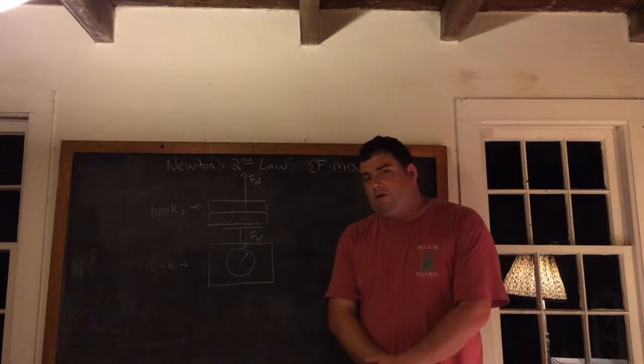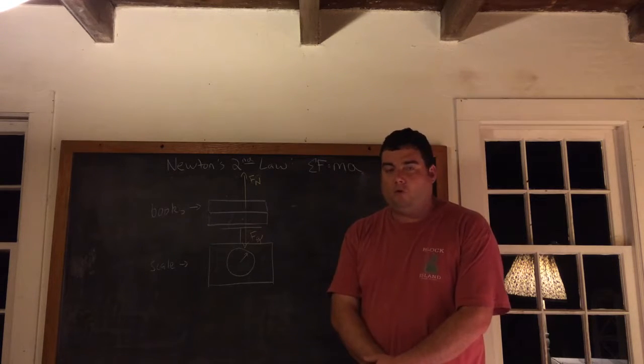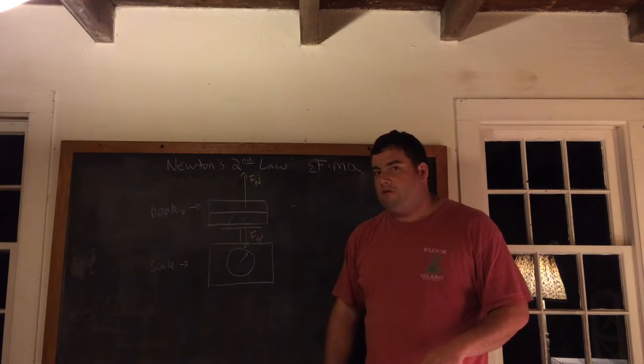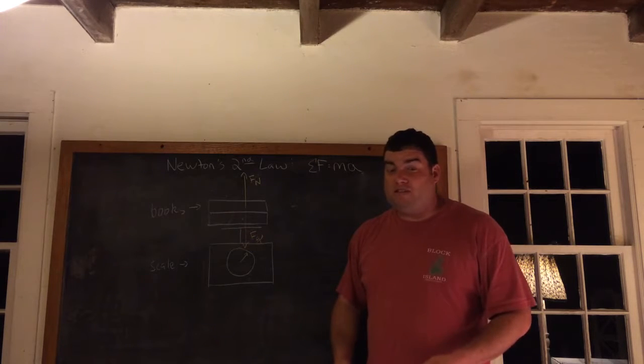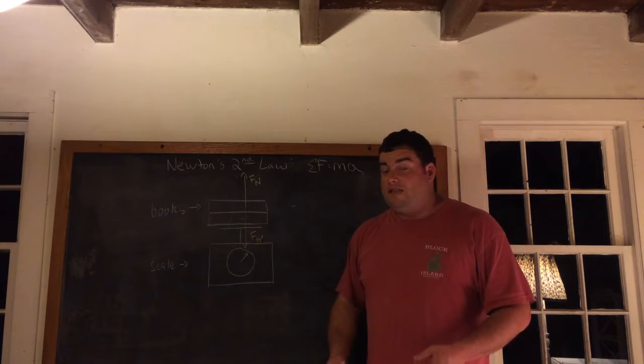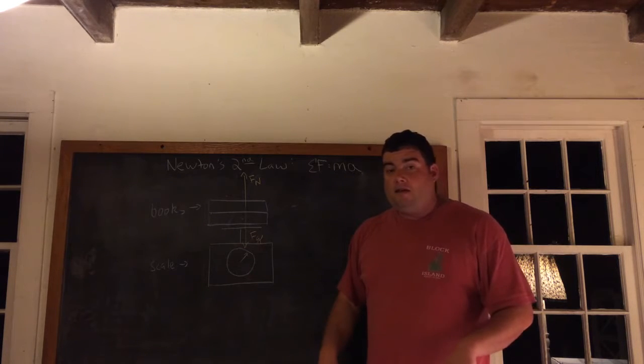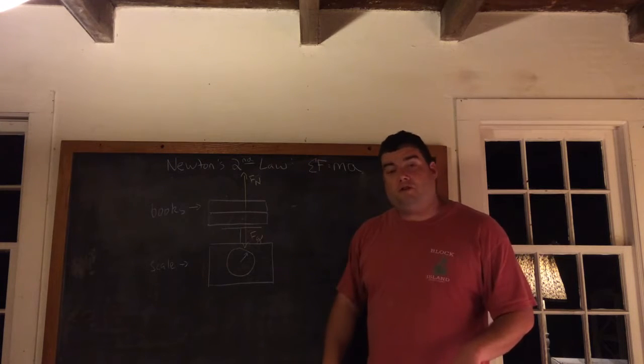So you probably noticed that the scale did not read a constant 14.5 pounds the whole time. That's what it started out as, so that must be what the weight of the books actually is. At first, it actually seemed to drop down to about 13 pounds, and then it went back to 14.5 for a while. And then, at the very end, it jumped up to about 17 pounds before returning to normal.